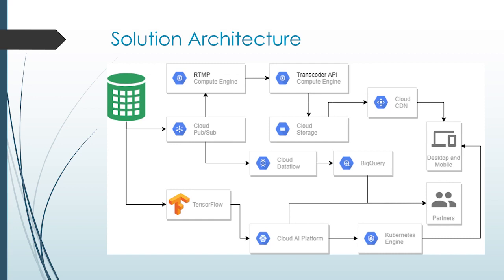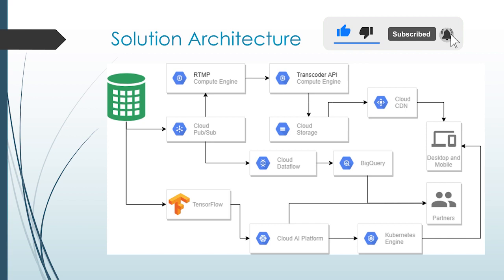For the second architecture approach: we take the data through RTMP and pull it toward Cloud Pub/Sub, from where we give the data to Compute Engine for the RTMP process, then use the Transcoder API to transcode it and store it on Cloud Storage. From Cloud Storage, through Cloud CDN, we can distribute the content across the world so any users accessing the content will be able to access it at a faster rate. We also transfer the data to Cloud Dataflow, which then flows into BigQuery, which can be viewed by partners for analytics.